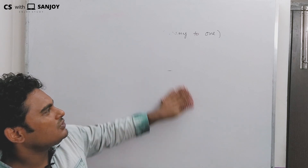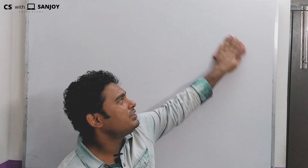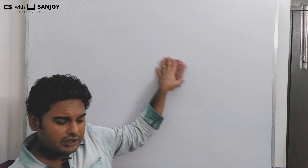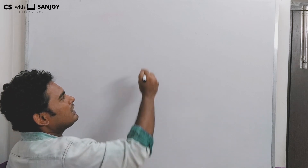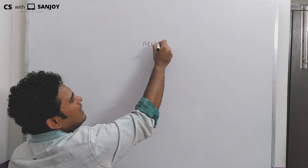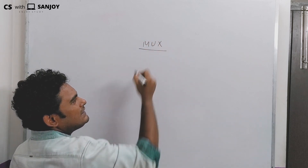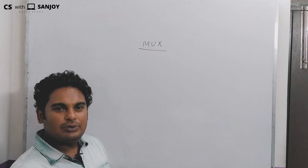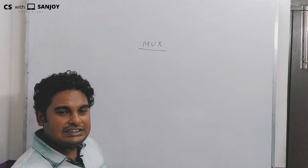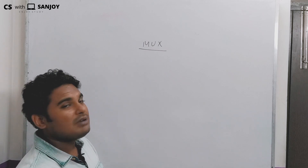Combinational circuit is a very important topic — specifically the multiplexer, which is very easy. In short, we have been talking about Mux, M-U-X, multiplexer in short. We will discuss Mux with you today.